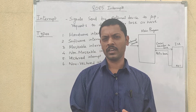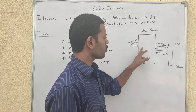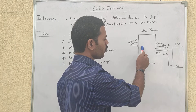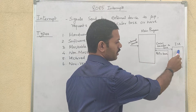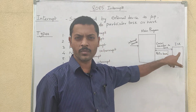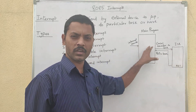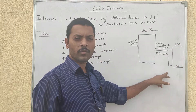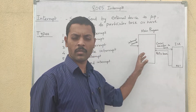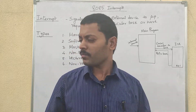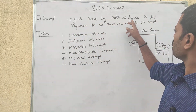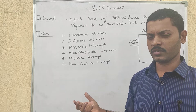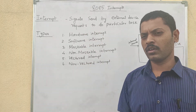So that is the interrupt. The main program is running on the microprocessor. When an interrupt occurs, control transfers to the interrupt service routine (ISR). Signals sent by the external device to the microprocessor — that's the interruption signal — requesting to do some particular task or work.